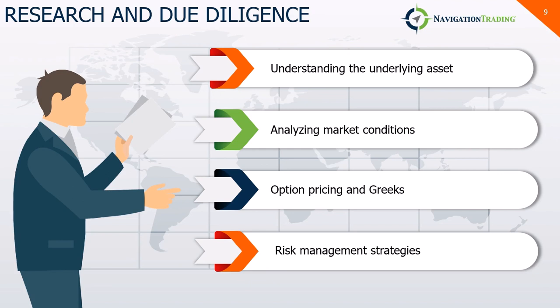Looking at market conditions: look at volatility, economic indicators, and potential events like earnings — for that stock and for similar stocks — since the health of a similar company can indicate where a certain company may go or what the market thinks it will do. A negative earnings report from a company like Microsoft can have implications for other tech and hardware companies like Google or AMD. Options are derivatives of the stock itself, so definitely be aware of the broader space and market conditions.